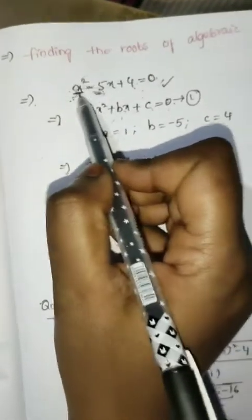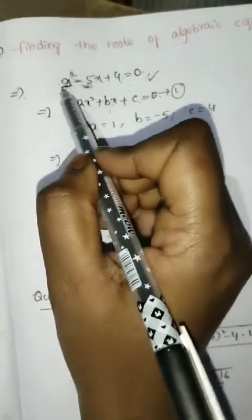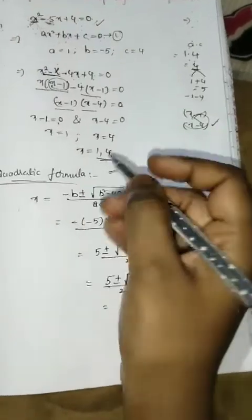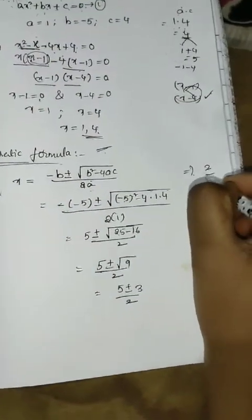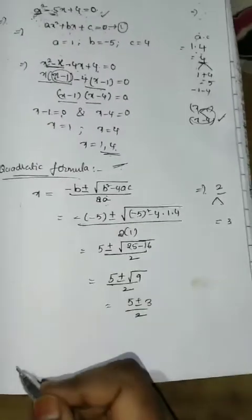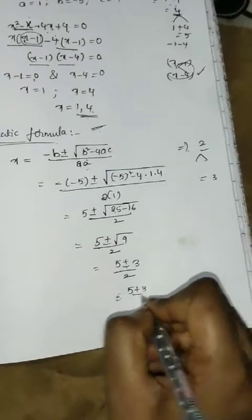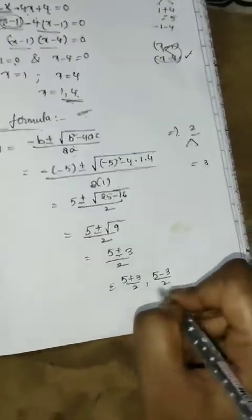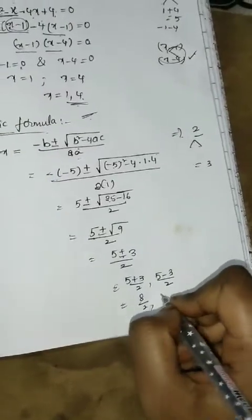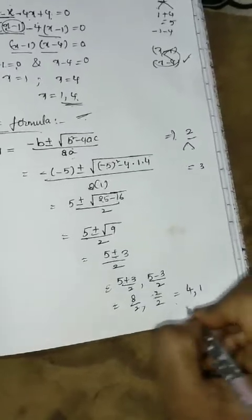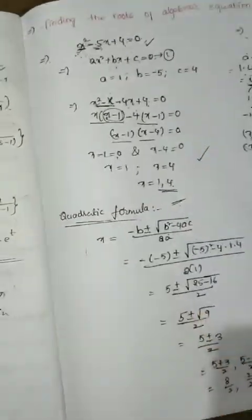Here the degree of the given equation is 2, so it is a quadratic equation, giving us 2 roots. A cubic equation has a degree of 3 and gives 3 roots. Taking plus and minus: we get 5 plus 3 by 2, which is 8 by 2 equals 4, and 5 minus 3 by 2, which is 2 by 2 equals 1. So the roots are x equals 4 and x equals 1. You can use either factorization or the quadratic formula.